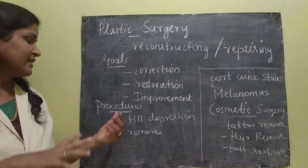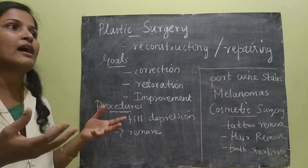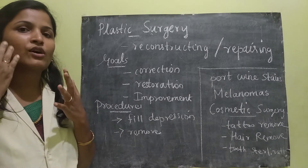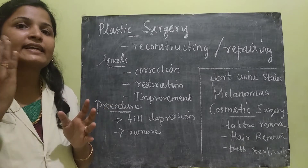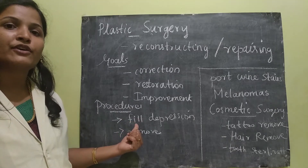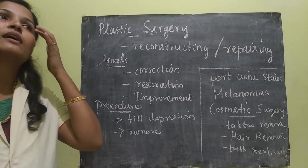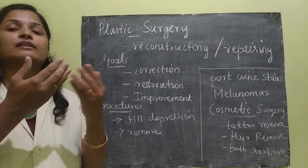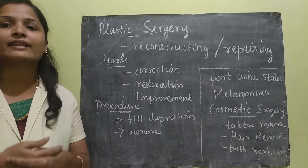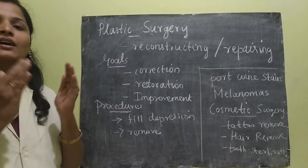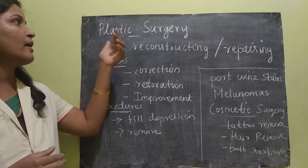The procedures in plastic surgery either involve filling the depression or removing tissue. For example, if a patient has holes or deformities in their face because of injury or accidents, that can be filled using tissue. Otherwise, for a contour change, a certain portion of tissue can be removed.